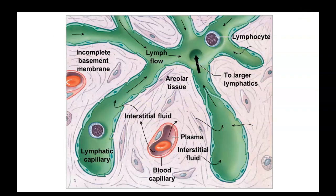Here's another picture showing how interstitial fluid can flow into these capillaries. It shows blood vessels and capillaries near the tissue delivering nutrients and picking up waste. The interstitial fluid that's still found in the tissues is released into these lymphatic capillaries, where it can then flow back with the lymph flow.